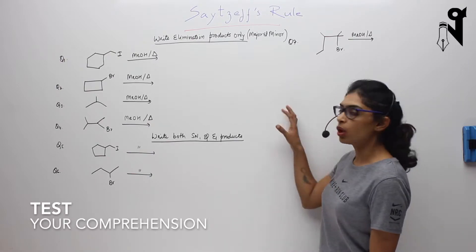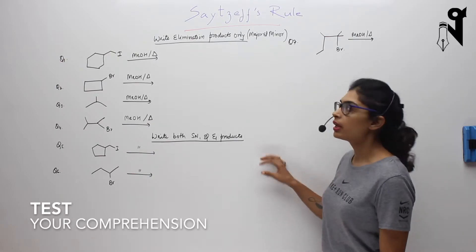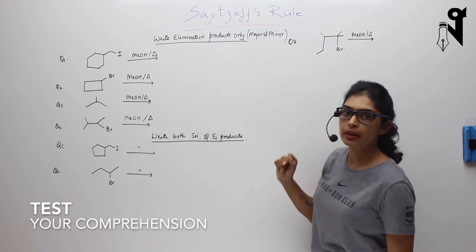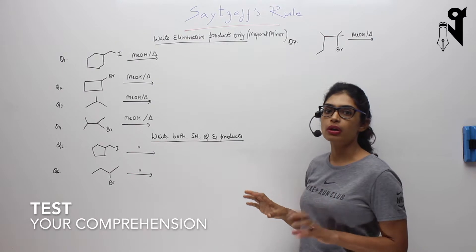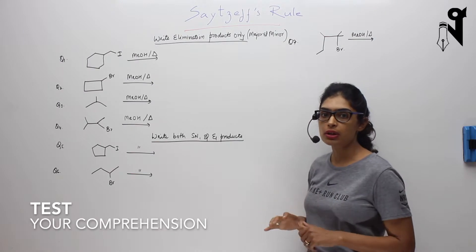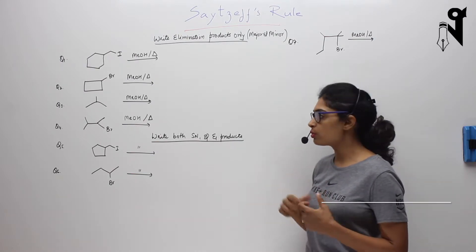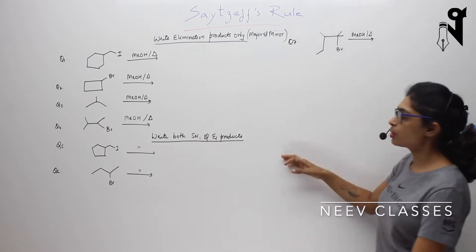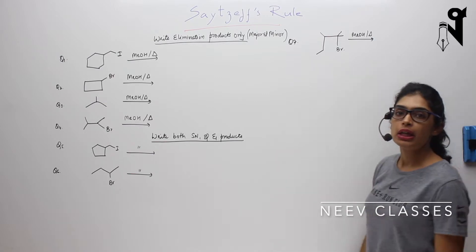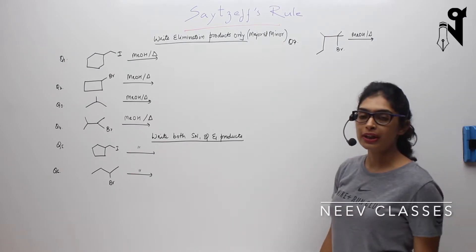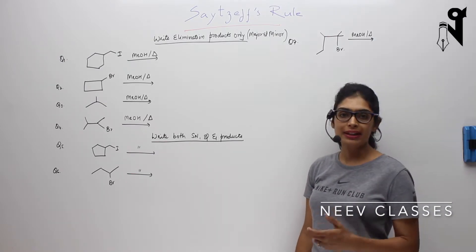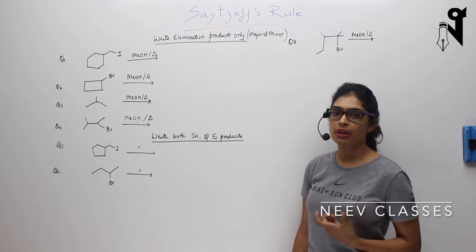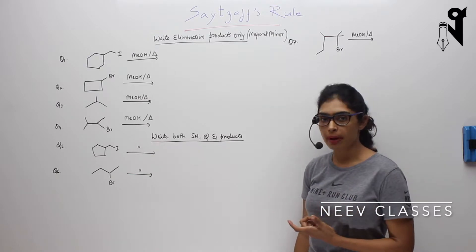Now solve these questions. In the first few questions, you have to just write the elimination products. You have to mention which one is major and which one is minor. In the next set of questions, you have to write the substitution product as well as the elimination product, and in the elimination products, you have to mention which one is major and which one is minor.